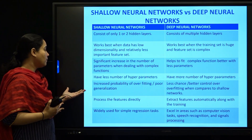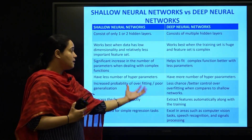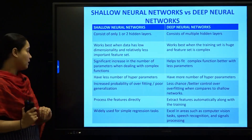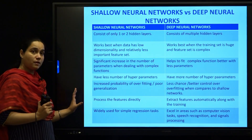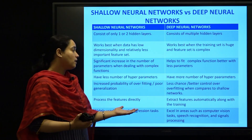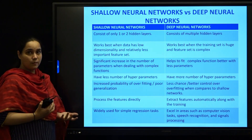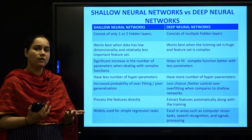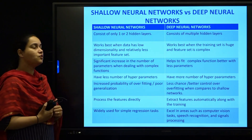Regarding feature processing, a shallow neural network processes features directly, whereas a deep neural network extracts features automatically along with training. In terms of applications, a shallow neural network works well for simpler tasks like simple regression and prediction, while deep neural networks work on more complex applications like computer vision, speech recognition, and signal processing. So for complex applications, it is better to use a deep neural network.